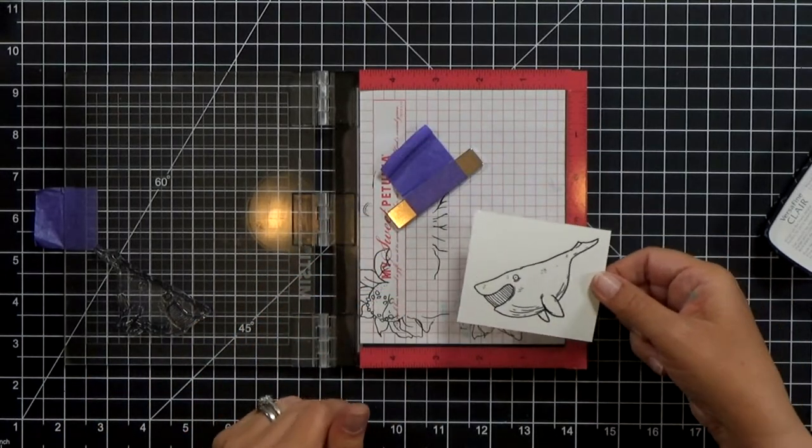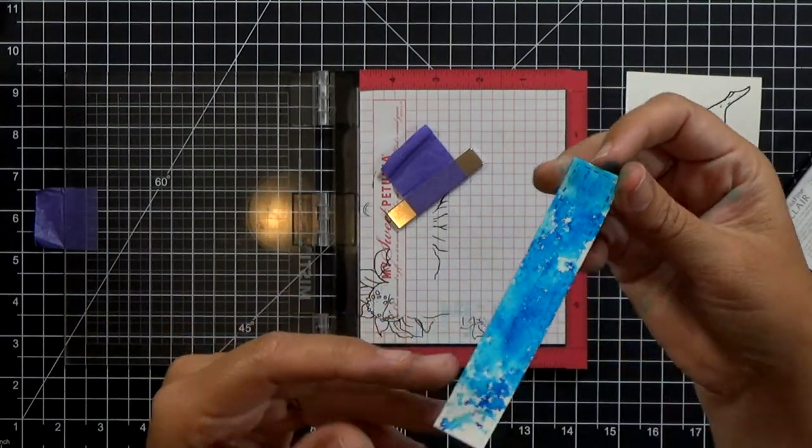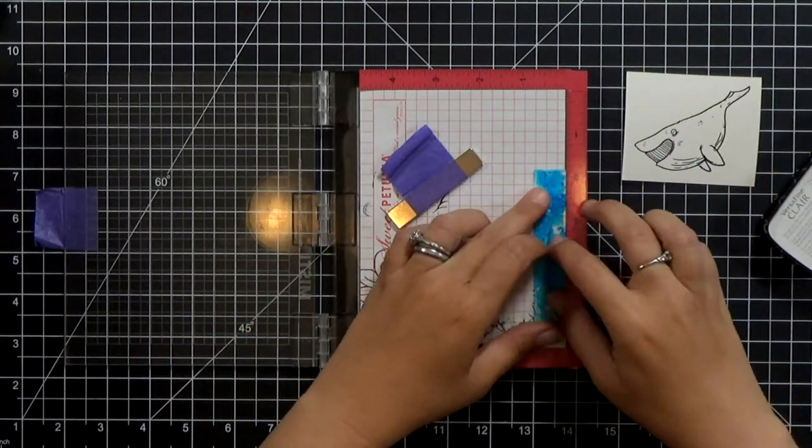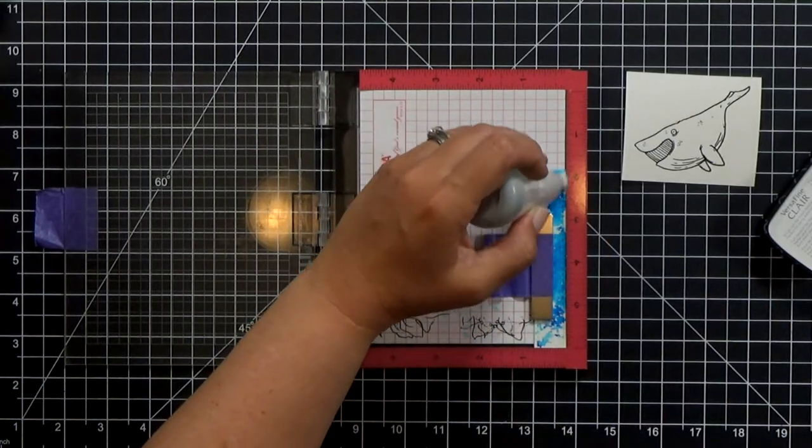You can use Copics with it as well but Copics don't work well on watercolor paper so I'll use my Arteza Real Brush markers for that. I also want to stamp pull on my little tab there.